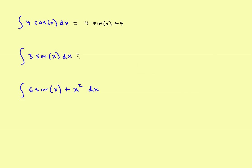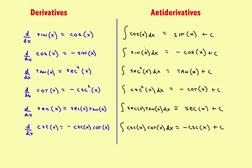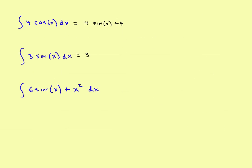Next example: you've got the constant 3. For the antiderivative of sine, look back at your list — the antiderivative of sine is negative cosine. So this becomes negative cosine of x plus c. In general, you'll move the negative out in front, so the final answer is negative 3 times cosine of x plus c.